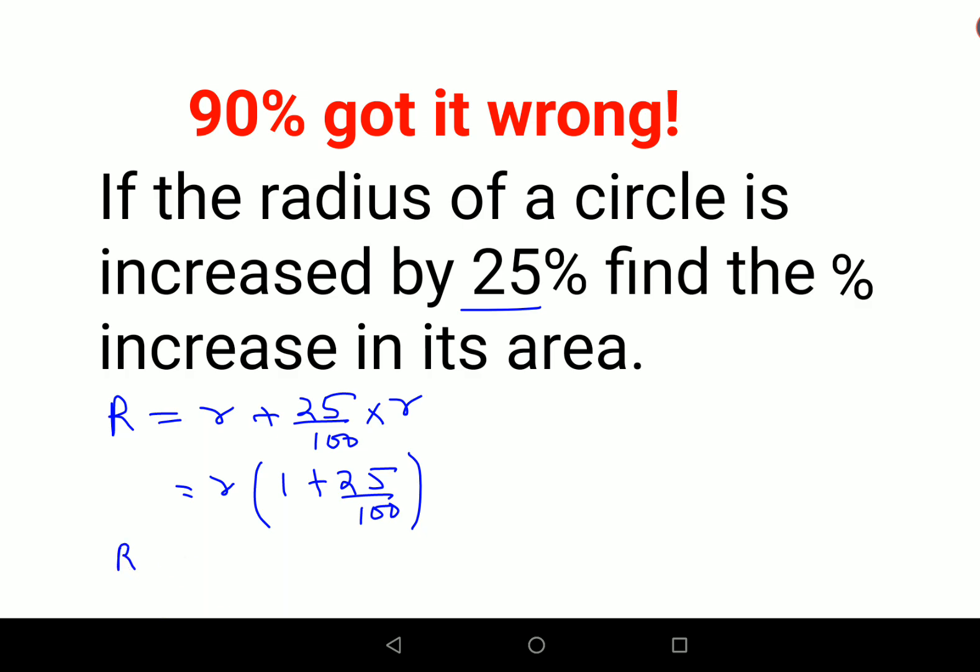So from here I will get capital R as small r into 100 plus 25 upon 100. So basically what we are doing is capital R is coming out to be 125 into small r upon 100. So now if you look this is cancelling 25 fours and 25 fives. So therefore I can say capital R is nothing but 5 upon 4 times r. This is very very important for you to do.